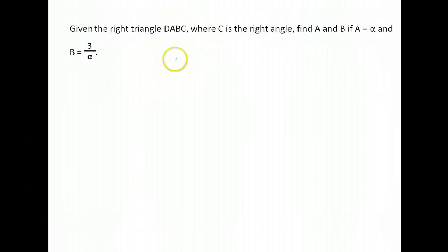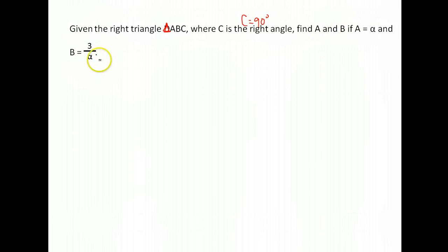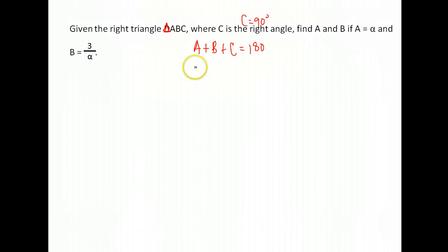That brings us to the last example. Once again we have right triangle ABC, C is a right angle — so C is a 90 degree angle. Find A and B if A is alpha and B is 3 over alpha. So we get A plus B plus C equals 180, substituting: alpha plus 3 over alpha plus 90 equals 180.